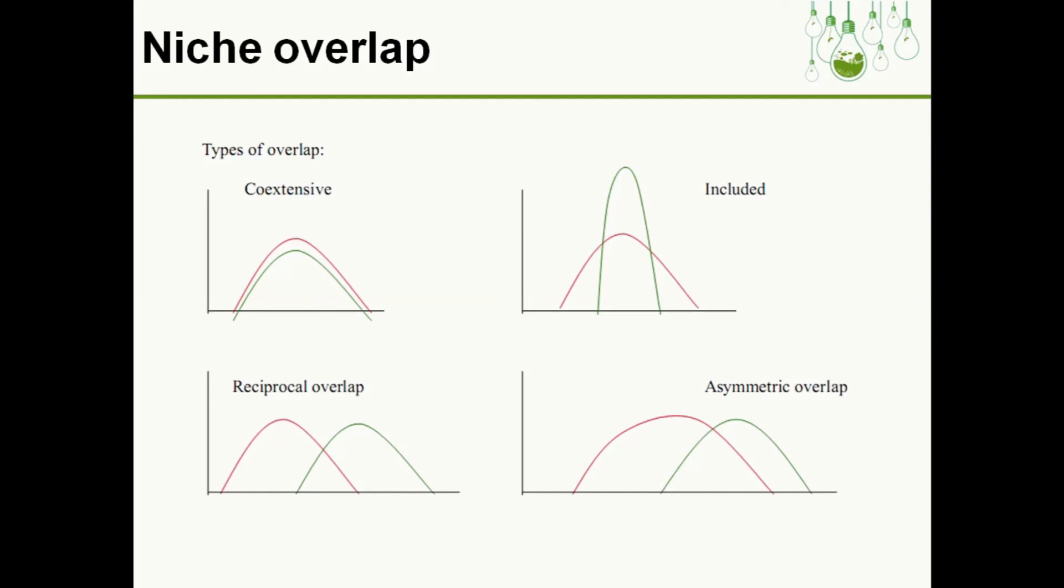Asymmetric overlap suggests unequal distribution of niche breadth. Species A feeds on 10 different fruits, species B feeds on five different fruits, and they have two fruits in common. This is asymmetric.